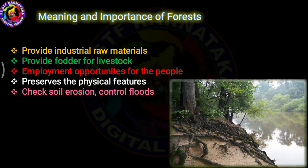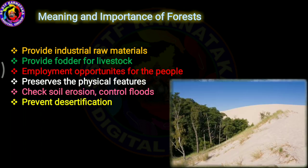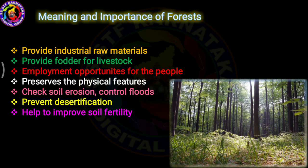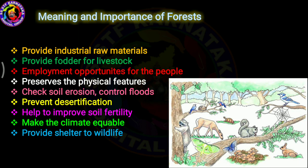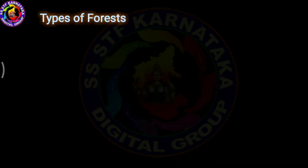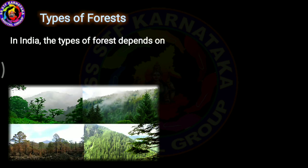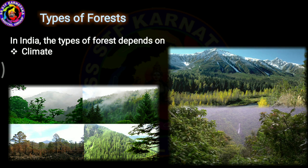One very important thing is that forests check soil erosion and control floods, because the roots of the trees hold the maximum amount of the outer layer of soil and don't let it wash away. They also prevent desertification and improve soil fertility, because leaves fall on the earth, decompose, and increase its humus content. Forests make the climate equable and are a shelter for wildlife — forests are the home of animals.